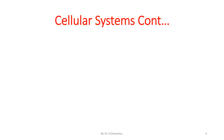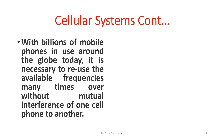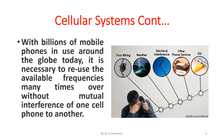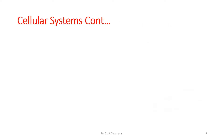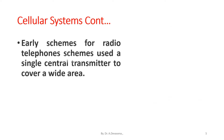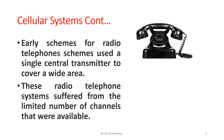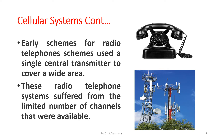With billions of mobile phones in use around the globe today, it is necessary to reuse the available frequencies many times over without mutual interference of one cell phone to another. Early schemes for radio telephone systems used a single central transmitter to cover a wide area, and these systems suffered from the limited number of channels that were available.